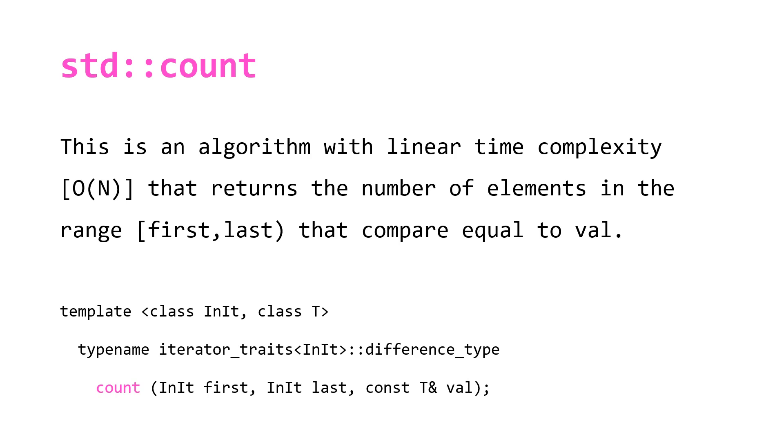std::count is an algorithm with linear time complexity O(N) that returns the number of elements in the range first to last that compare equal to val. In our declaration you can see it's taking two templates InIt which stands for input iterator. If you're not familiar with iterators, take a look at the C++ iterators video which describes the differences between the different types of iterators and the T which is the type of value.